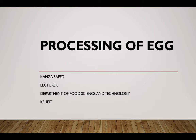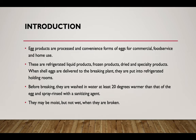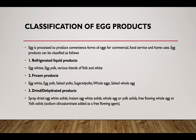In this lecture we will discuss processing of egg. Egg products are processed as a convenience form of eggs for commercial food service and home use. They are refrigerated liquid products, frozen products, dried and specialty products. When shell eggs are delivered to the breaking plant, they are put in refrigerated holding rooms. Before breaking, they are washed in water at least 20 degrees centigrade warmer than the egg and spray rinsed with a sanitizing agent. They must be moist, not wet, when they are broken.